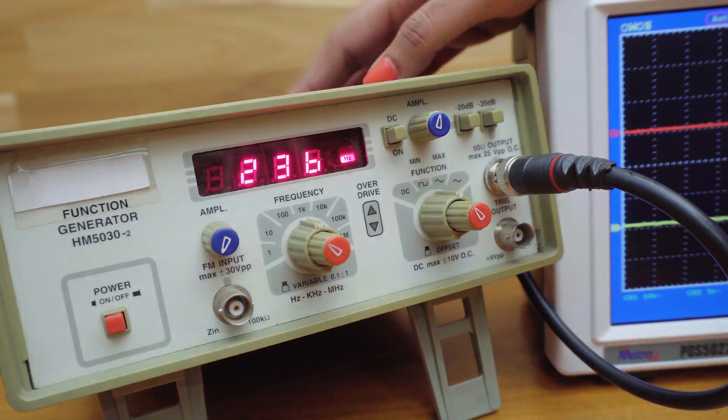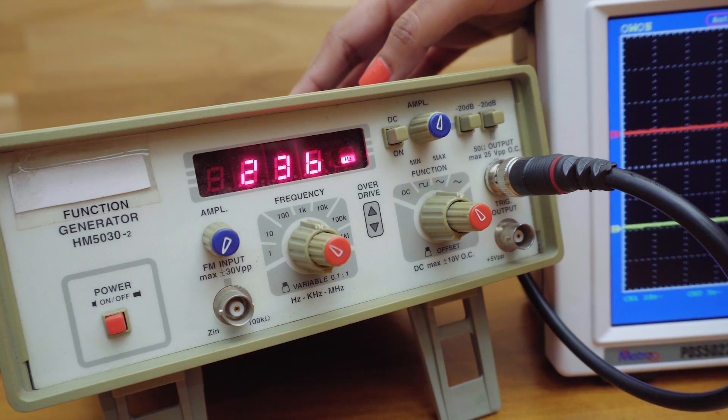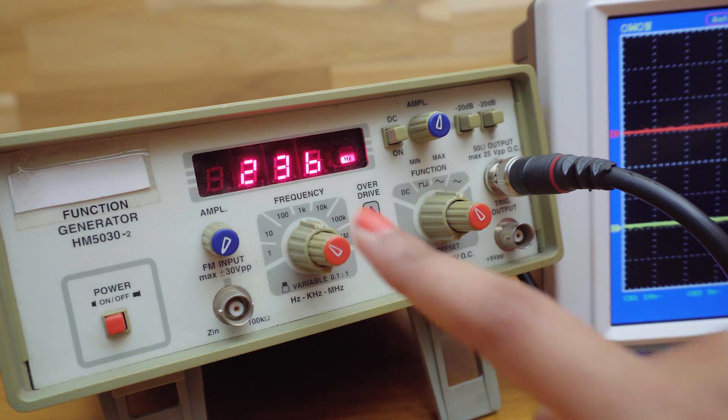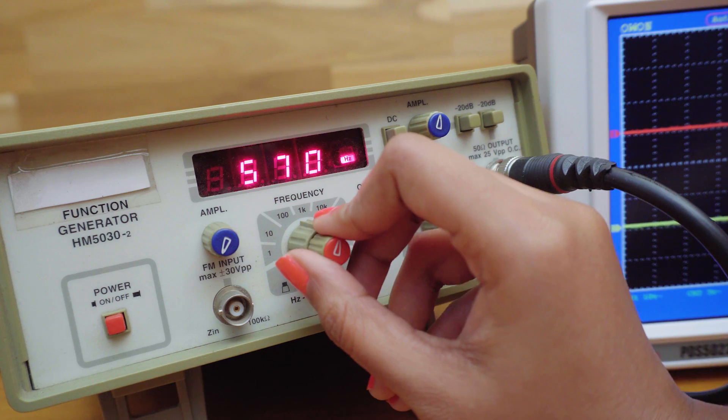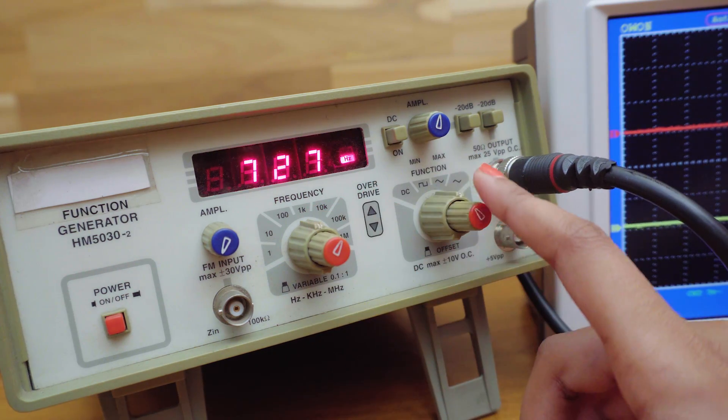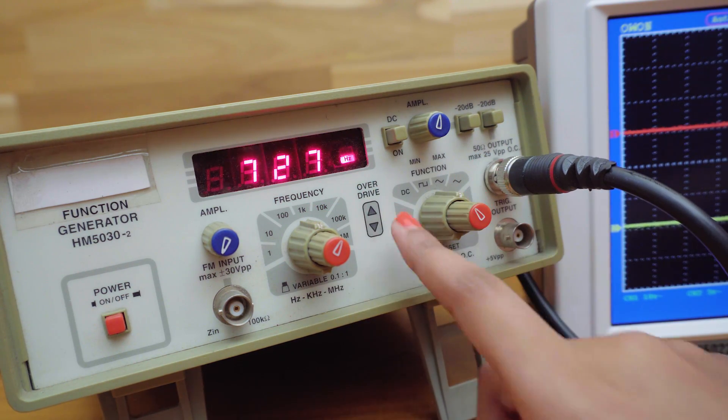This is a function generator. I'll be using it to show you various waveforms and signals on the DSO. With this control, we can change the frequency. It generates various type of signals like DC voltage,